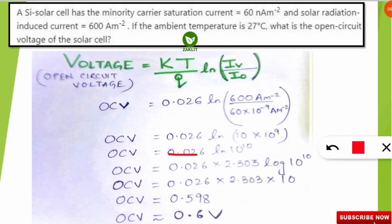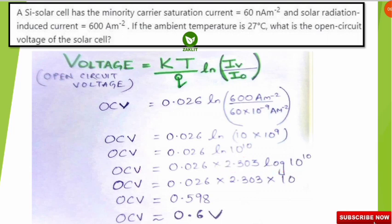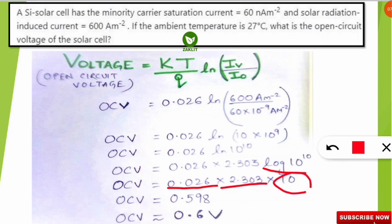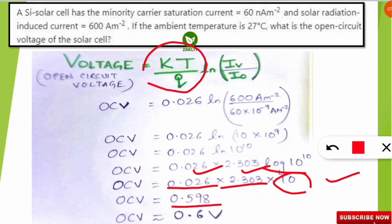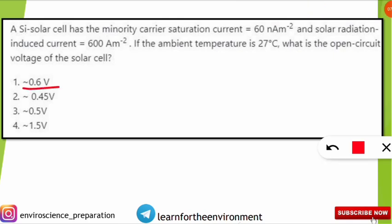To convert the natural log (ln) to log base 10, we multiply by 2.303: ln(10¹⁰) = 2.303 × log(10¹⁰). Since log(10¹⁰) = 10, we have: V_oc = 0.026 × 2.303 × 10 = 0.598 volts, which is approximately equal to 0.6 volts. This matches option 1 in the answer choices, so the correct answer is 0.6 volts.